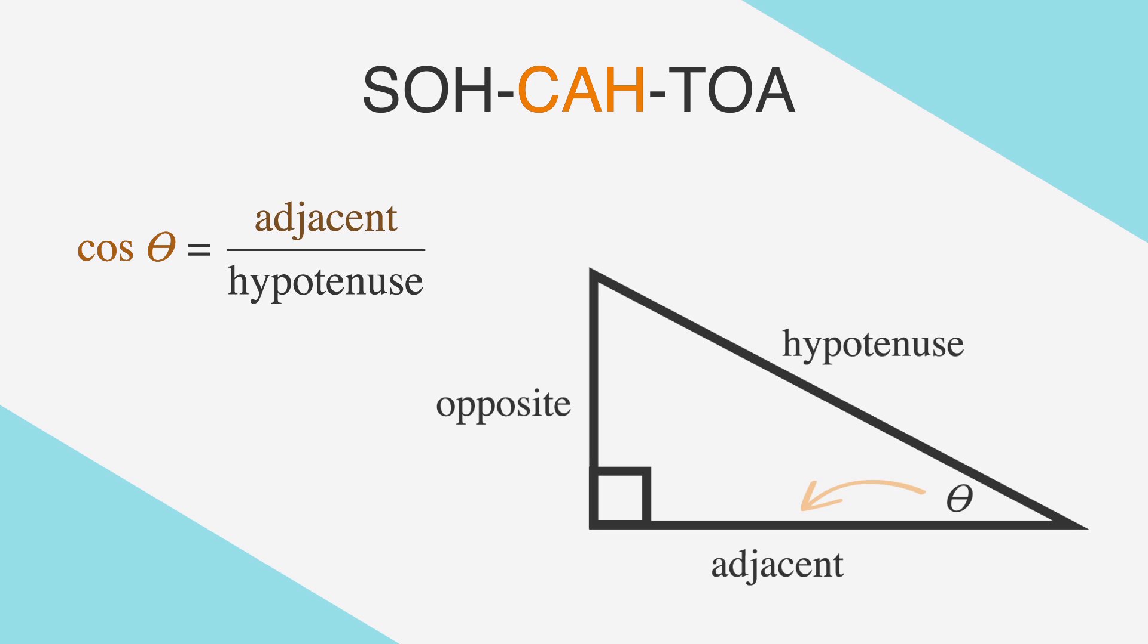CAH stands for cosine of theta equals adjacent over hypotenuse, and TOA reminds us that tangent of theta equals opposite over adjacent.